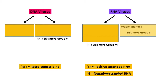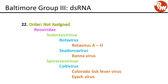Moving on to double-stranded RNA viruses, Baltimore Group 3. Order not assigned, family Reoviridae, subfamily sedoreoviridae. Genus rotavirus includes rotaviruses A through H. Genus seadornavirus includes the Banna virus. The other subfamily, spinareoviridae, has genus coltivirus, including Colorado tick fever virus and Eyach virus.